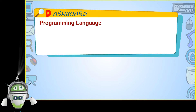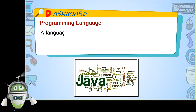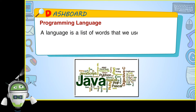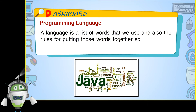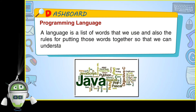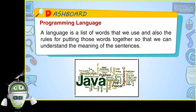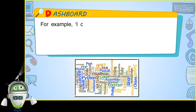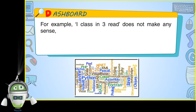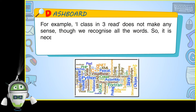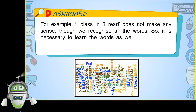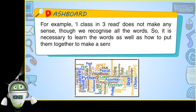Programming Language. A language is a list of words that we use and also the rules for putting those words together so that we can understand the meaning of the sentences. For example, 'I class in 3 read' does not make any sense, though we recognize all the words. So it is necessary to learn the words as well as how to put them together to make sense.